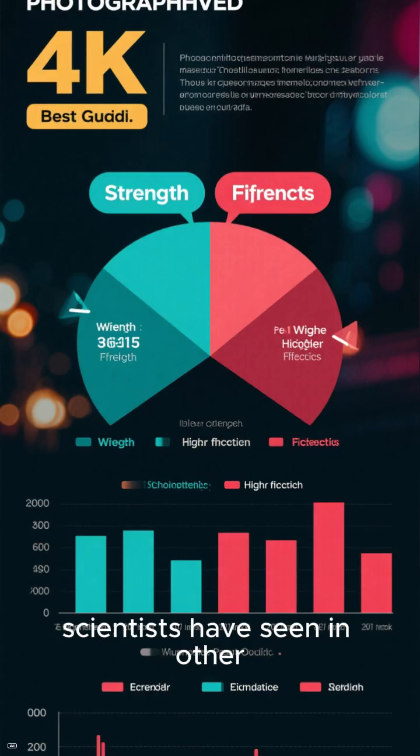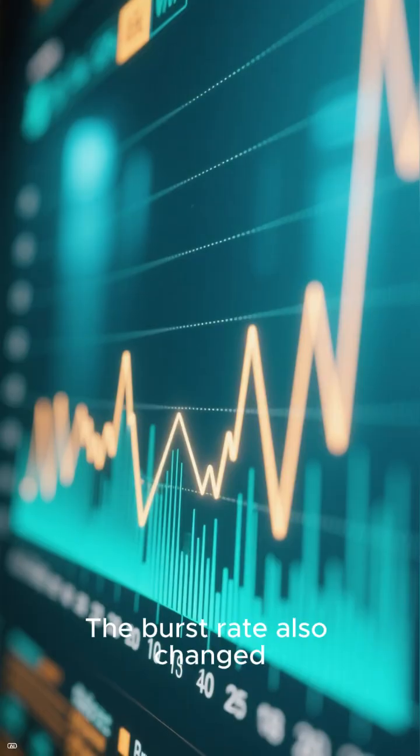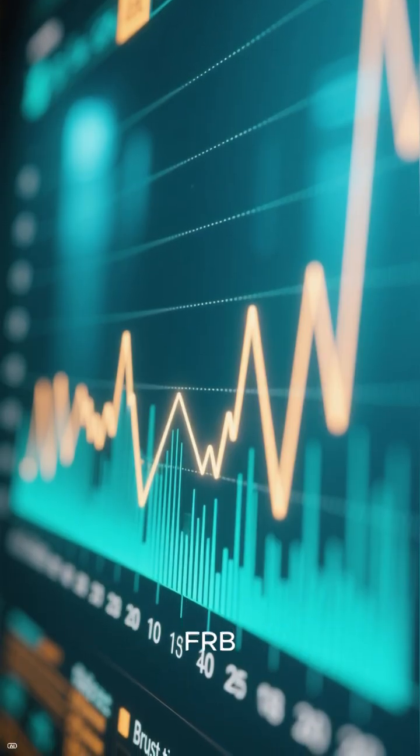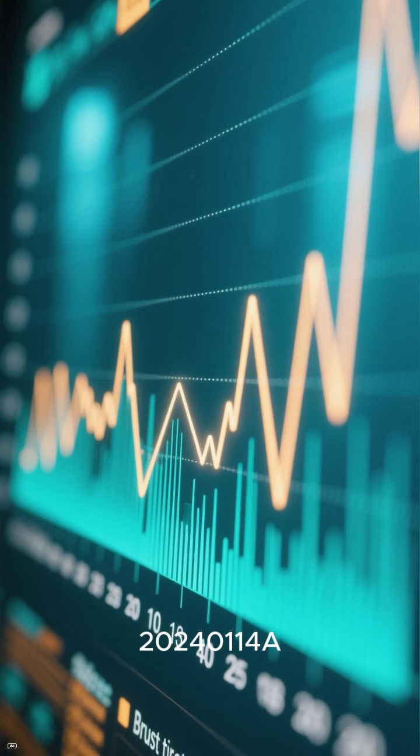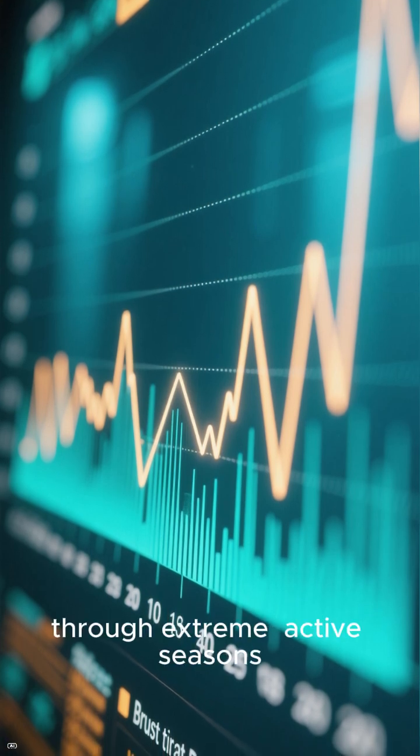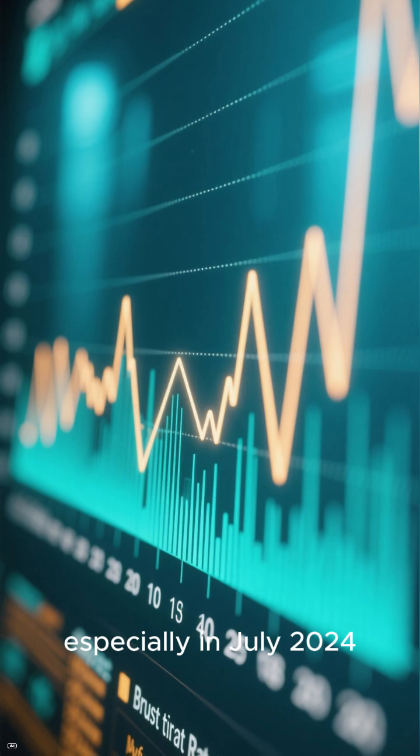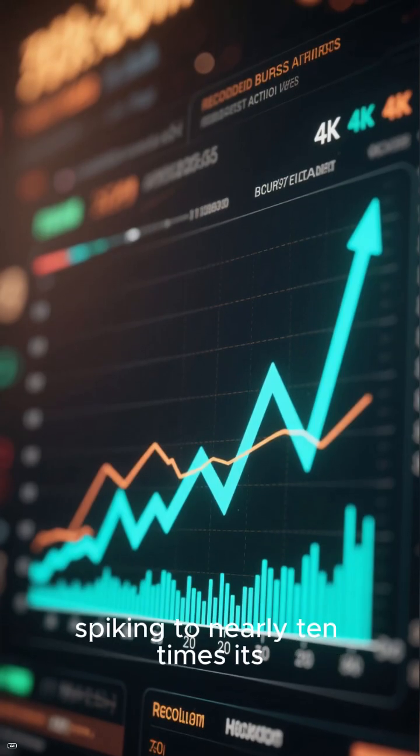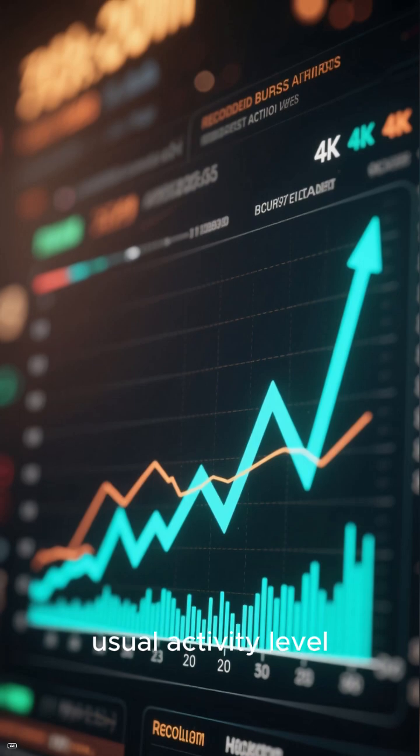Scientists have seen this in other repeating FRBs. The burst rate also changed dramatically over time. FRB 20240114A went through extreme active seasons, especially in July 2024 and early January 2025, spiking to nearly 10 times its usual activity level.